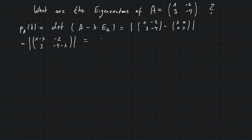So we multiply (1 minus lambda) times (minus 4 minus lambda), then subtract minus 6, which means we add plus 6. Simplifying this term gives us lambda squared plus 3 lambda plus 2. So this is our characteristic polynomial.